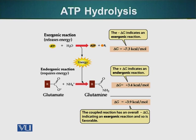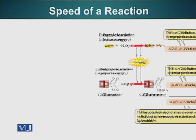We are subtracting 3.4 kilocalories from 7.3 kilocalories. When these reactions are coupled — one is exothermic (giving energy out) and the other is endothermic (taking energy in) — we can make these processes feasible.